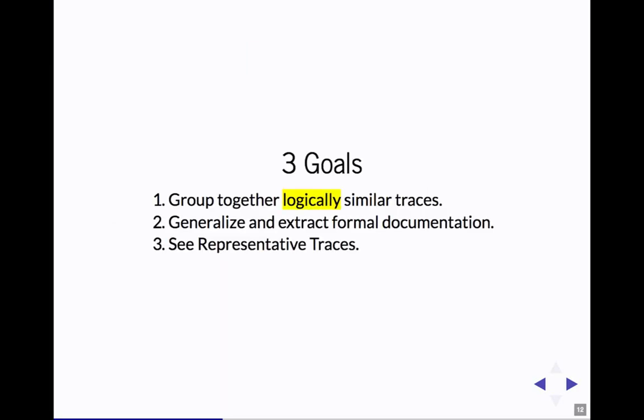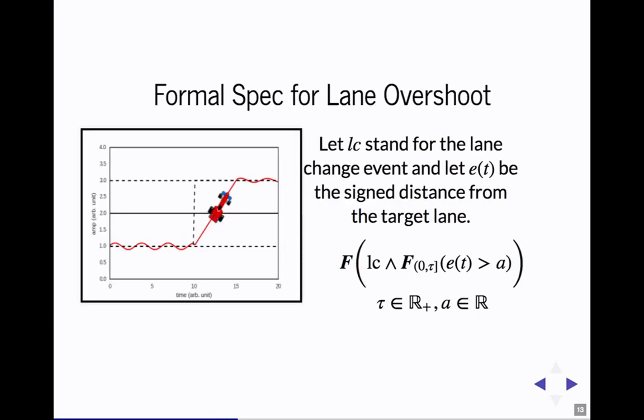The idea in this work is that you use the logical specification itself as your similarity metric. Here we can define the lane change specification as just, there's a lane change command that occurs, and so eventually you get a lane change, and then between zero and tau seconds, this sign distance from the lane is greater than A. What that's measuring is how much of an overshoot you're doing. That could be negative, that could be positive, but it's telling you how much more you went over time tau.